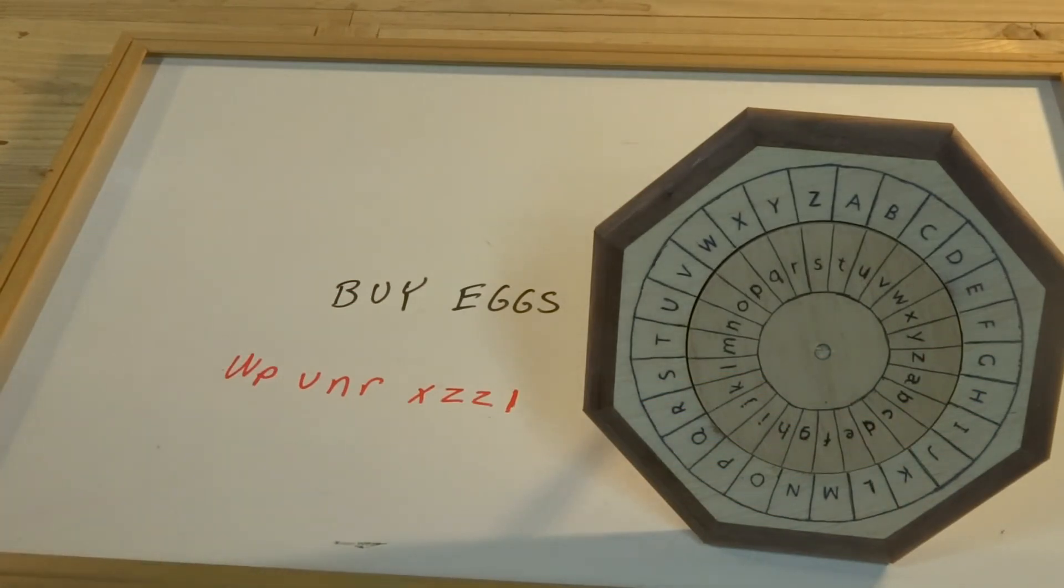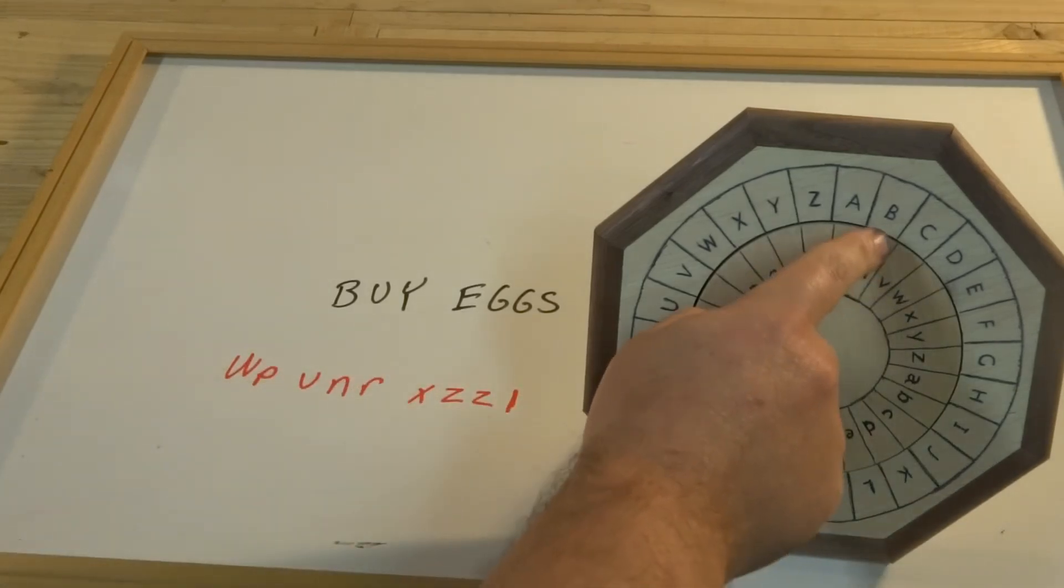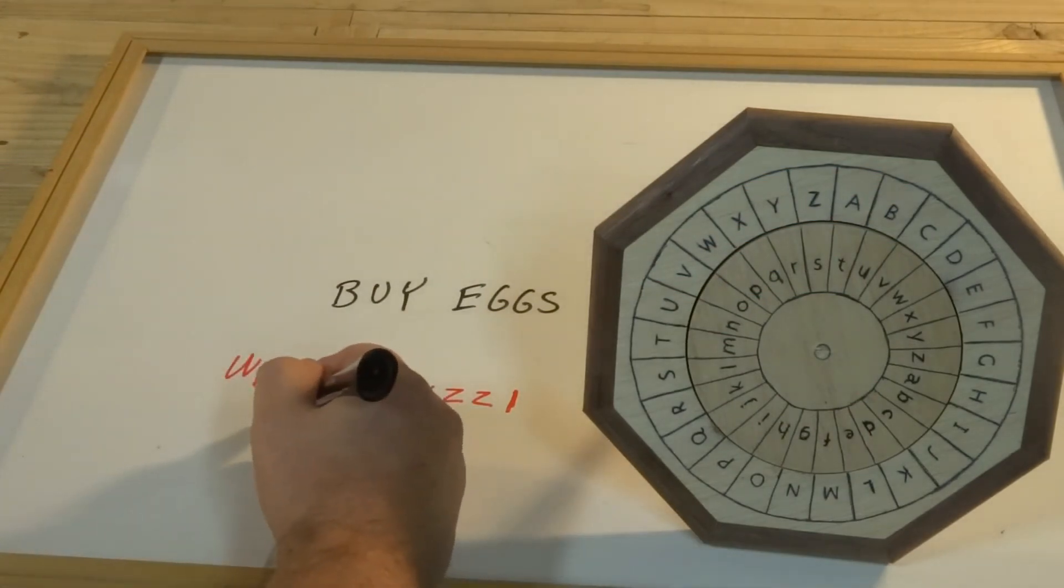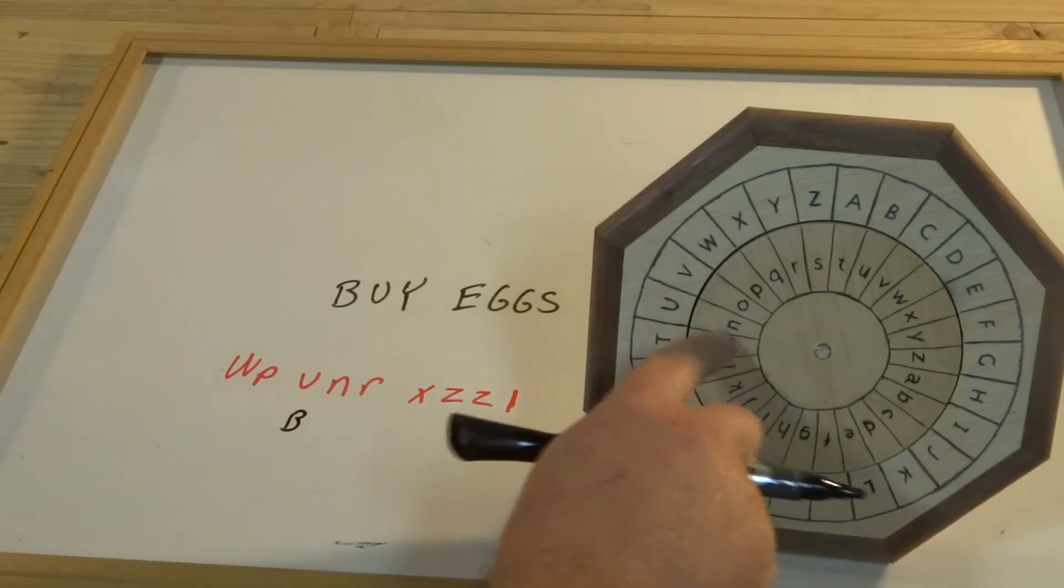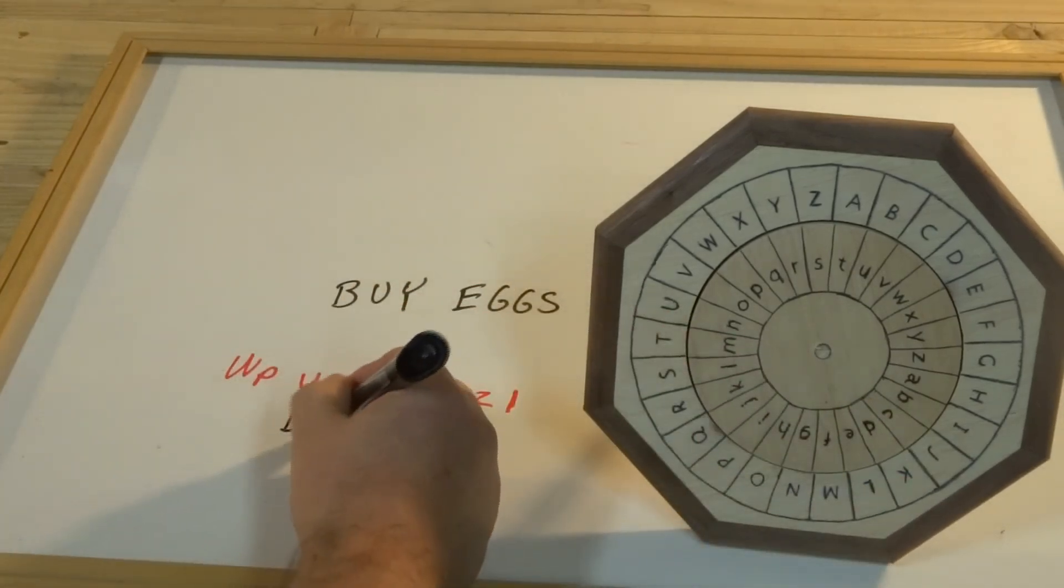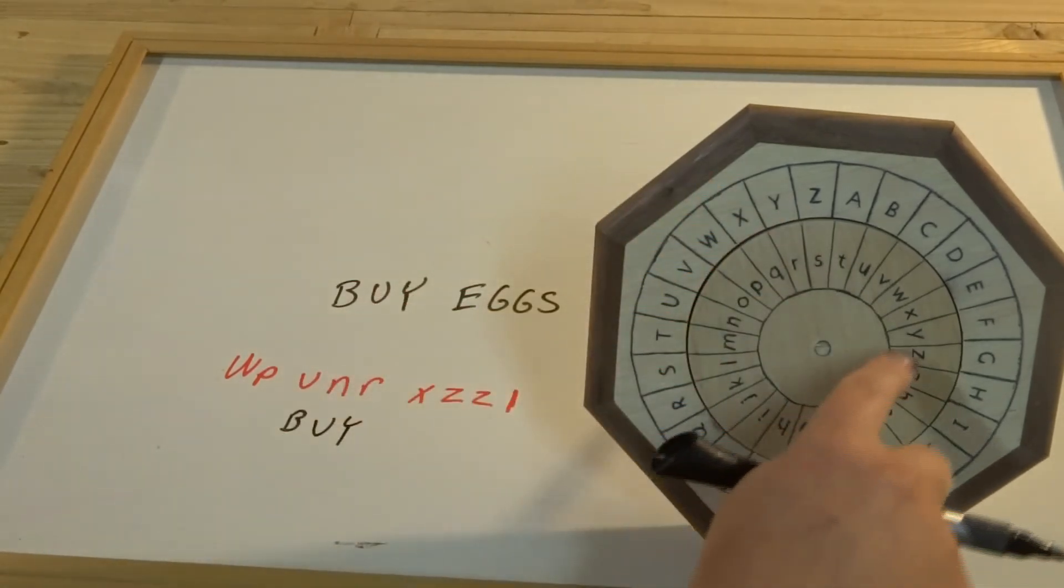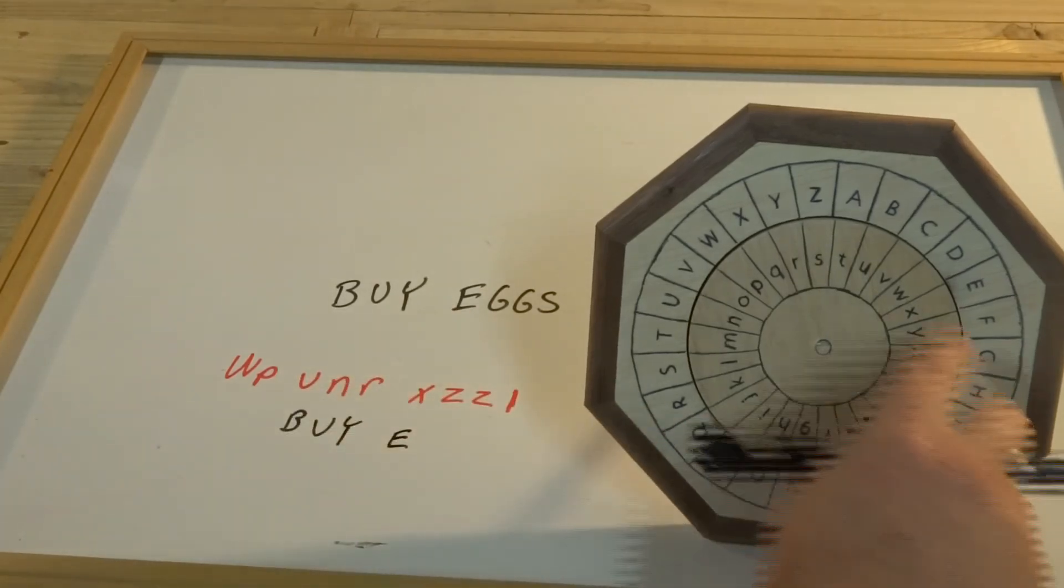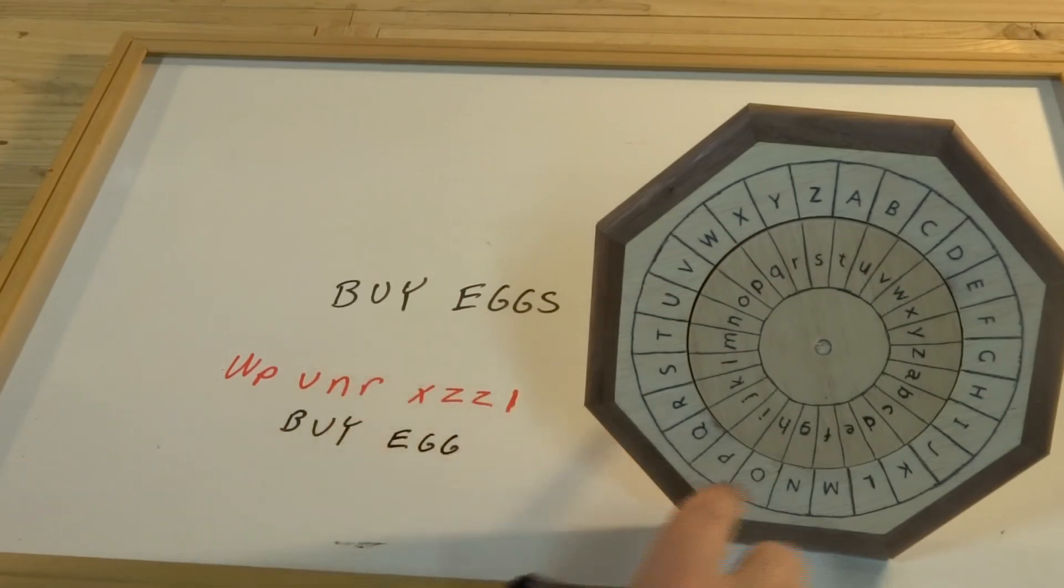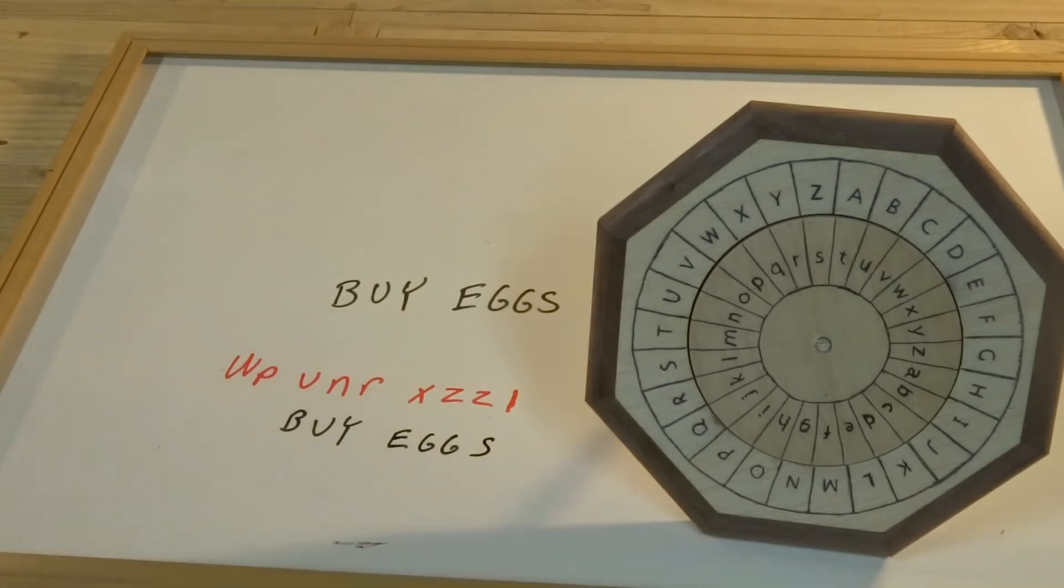And now we just work backwards, or opposite of what we did before. So we look for U on the inner ring, and we write down the corresponding letter on the outer ring. That's B, N becomes U, R becomes Y, X becomes E, Z becomes G, and L becomes S, and we're back to our original message again.